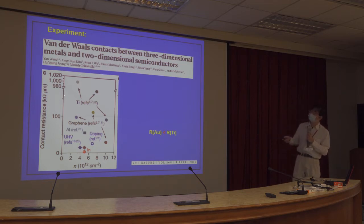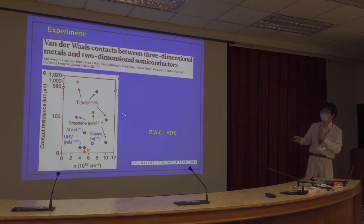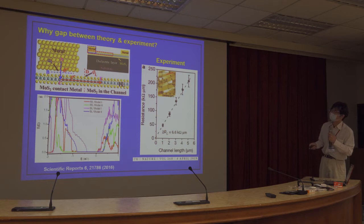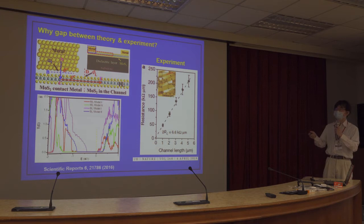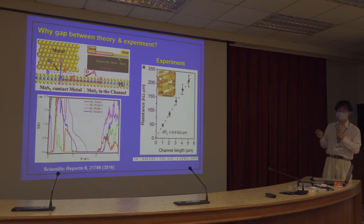This theoretical view persisted for four years. However, in a recent experiment, compiled results showed that Ti contact resistance is around 1000 kΩ·μm, while gold under ultra-high vacuum conditions shows much lower contact resistance — contrary to prior theoretical predictions. A 2016 paper noted that previous calculations only considered the contact between infinitely extended gold and MoS2, neglecting the additional contact resistance arising from the MoS2 channel region where carrier density varies.